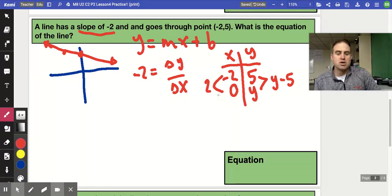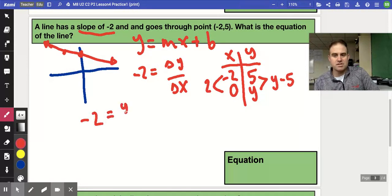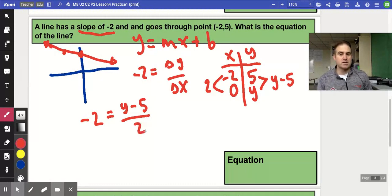Now we can take these two changes, the differences, and place them into this fraction and solve the equation. When we solve the equation for y, that becomes the y-coordinate of our y-intercept, which is our b value. So now we can come down here and say negative 2 equals y minus 5, the change in y, divided by 2, the change in x.